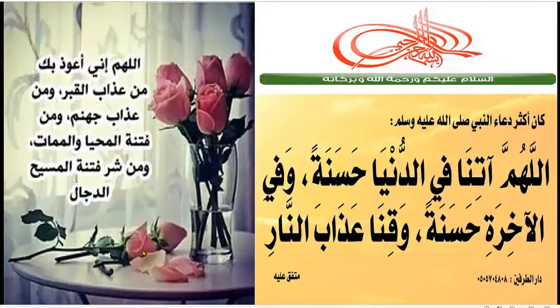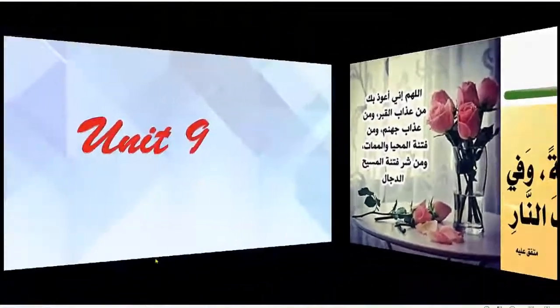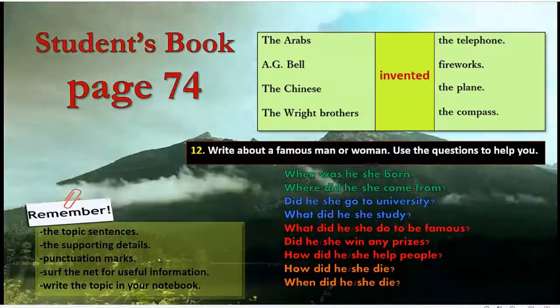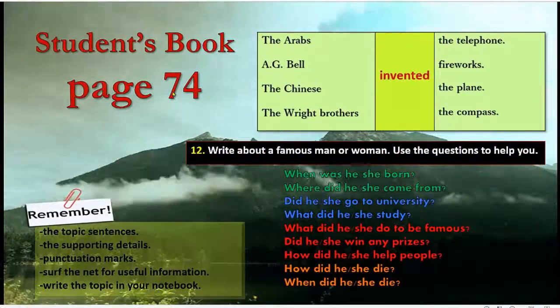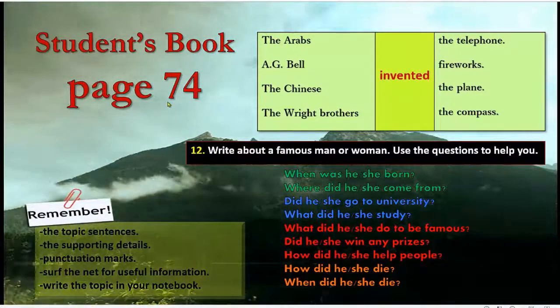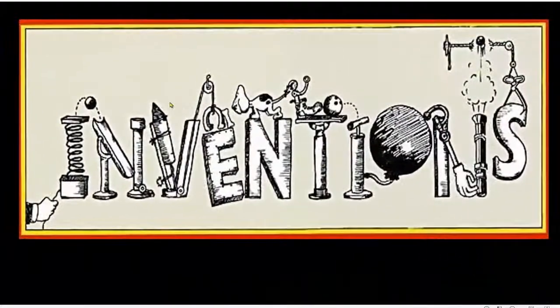Welcome, grade 6 students. Today we are going to complete our lessons from Unit 9: Famous People. This is the fourth lesson. Please open your book to page 74. In this lesson, we are going to talk about inventions and inventors.